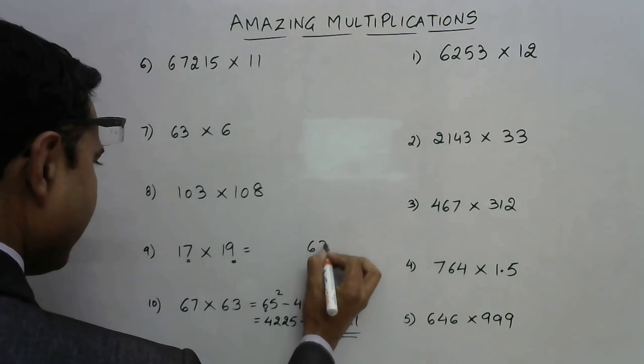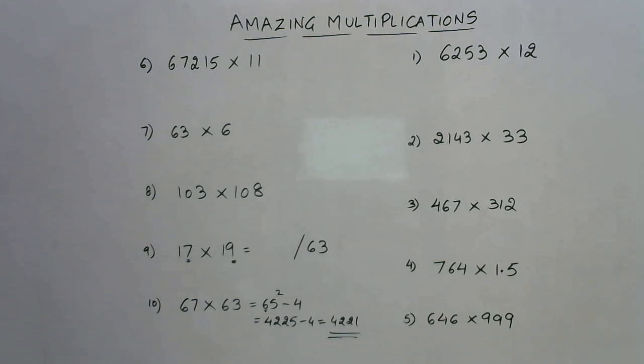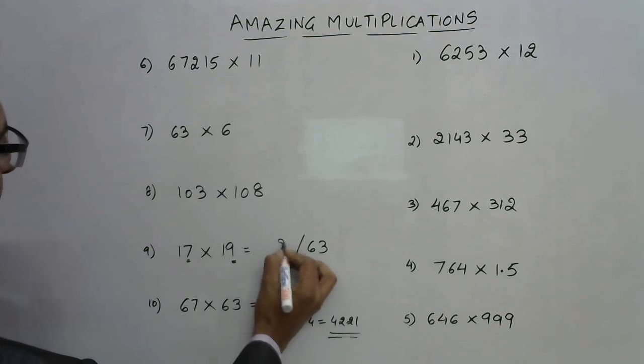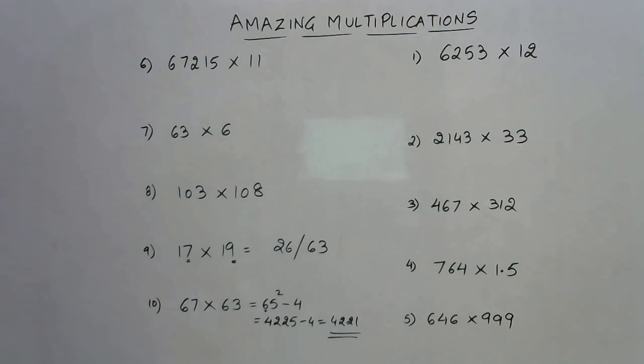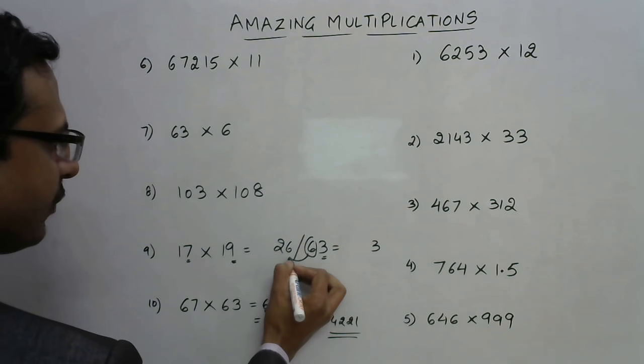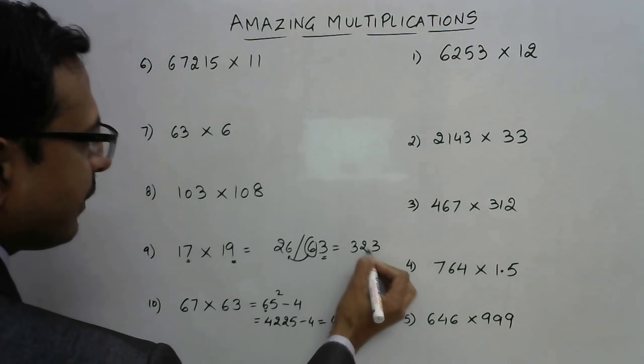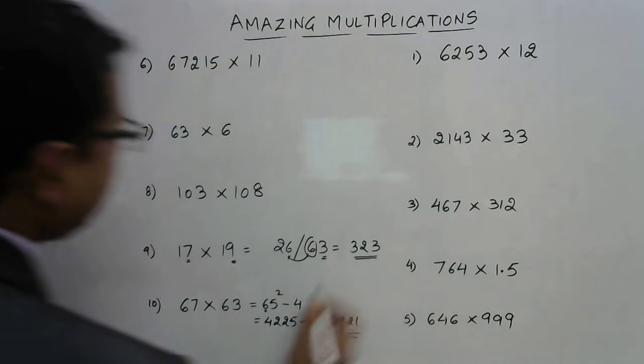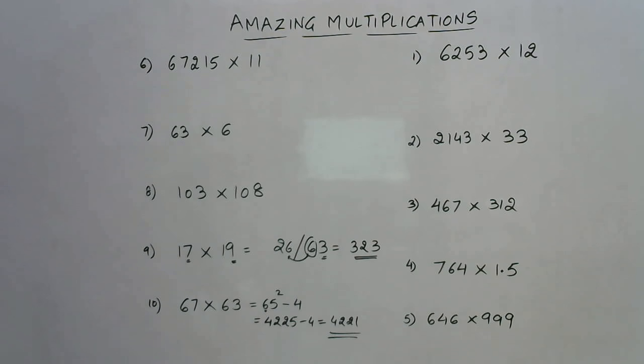Write 63 here and then separate it using a slash. Now this number 17 is to be added to the unit place, that is 9. So 17 plus 9 is 26, or you can do 19 plus 7. So you have two numbers: 26 and 63. From here retain the unit digit and the tens digit is carried forward. So 26 plus 6 becomes 32, giving you the product 323. Yet another very important short trick and very easy to master.